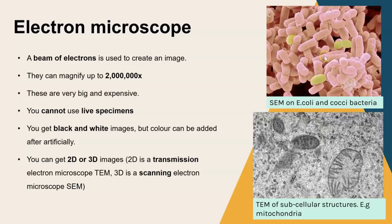The images produced by electron microscopes are always black and white, though you can artificially color that image in software like Photoshop. There are two different types of electron microscopes: a transmission electron microscope, which gives 2D images, and a scanning electron microscope, which gives 3D images. We can see a 3D image of E. coli and cocci bacteria from the scanning electron microscope, and a transmission electron microscope image showing mitochondria as subcellular structures.